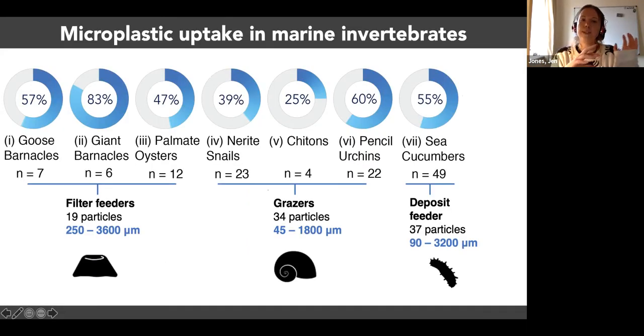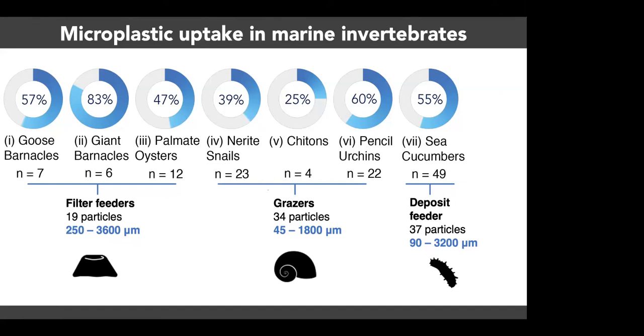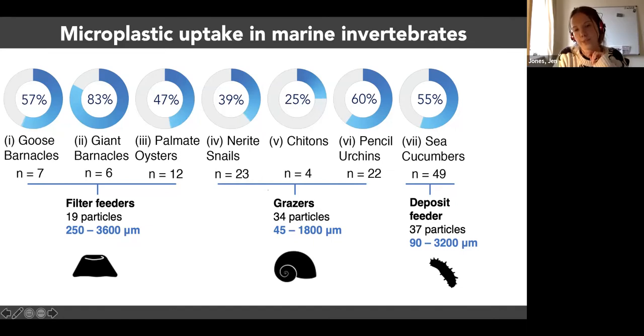So that's the first environmental data snapshot. Now we're looking into the food web impacts. As I said, we looked across seven species of marine invertebrates. The numbers in percent in pies are the percentage of individuals that we found microplastics in. The n numbers underneath are the number of individual animals that we sampled. So you can see there's quite a big range from only four chitons that we sampled versus 49 sea cucumbers. So just a word of caution with this data that some animals were more numerous and we were able to sample more of them.